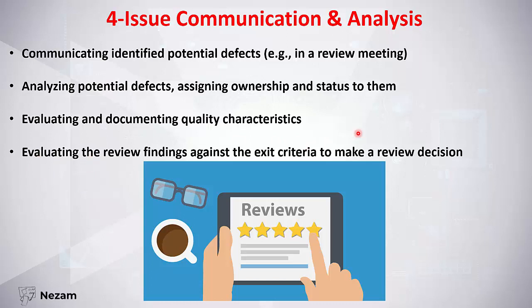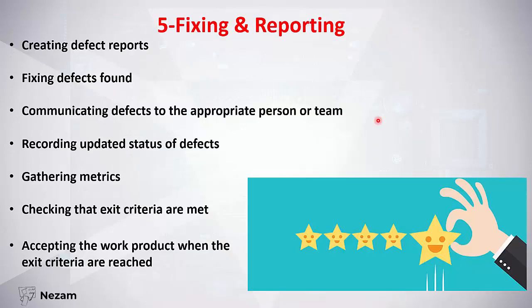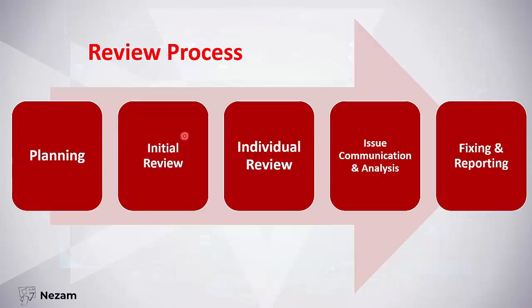When we find review findings, we evaluate them and compare them with the exit criteria to decide whether the work product is ready or not. The last step is fixing and reporting: we create defect reports, the author fixes the defects found, and when the status of a defect changes we update it. We gather any metrics we want and check that our exit criteria is met. If exit criteria is met, the work product is accepted.